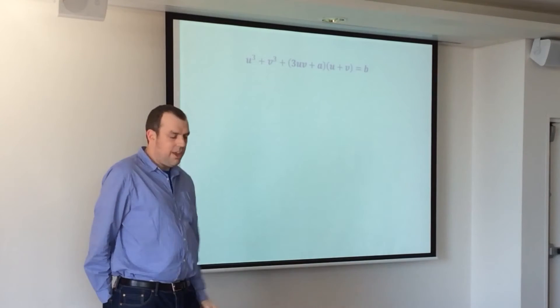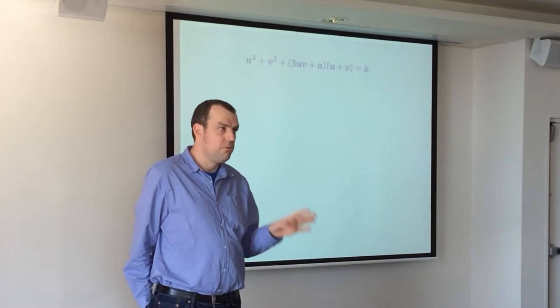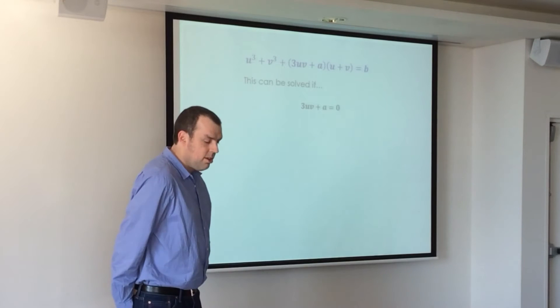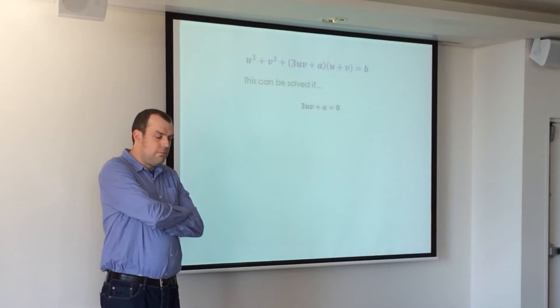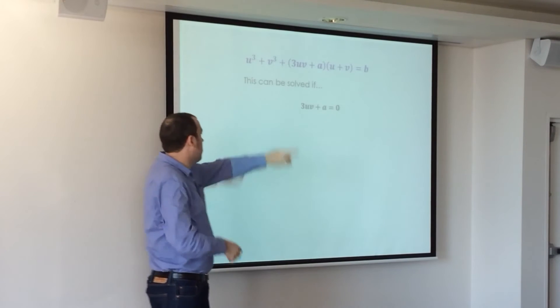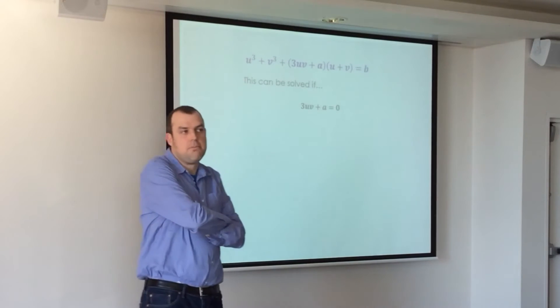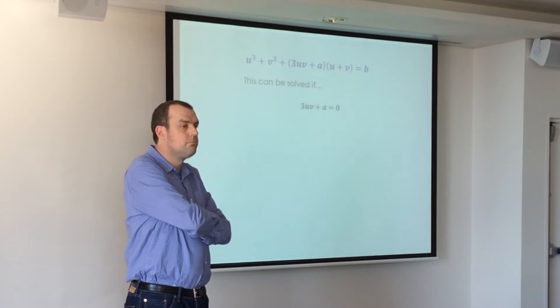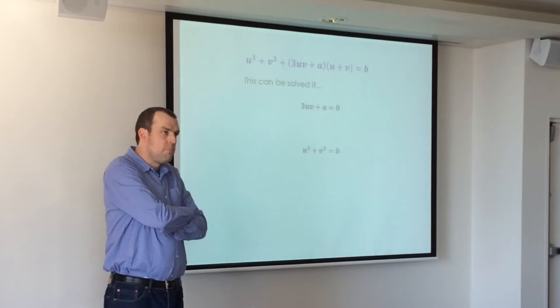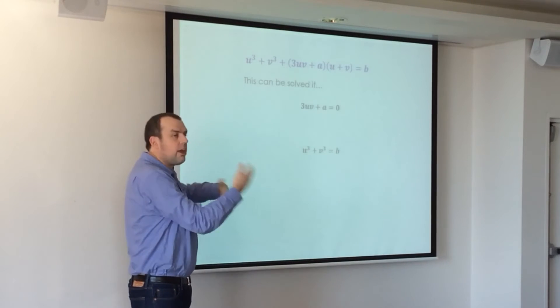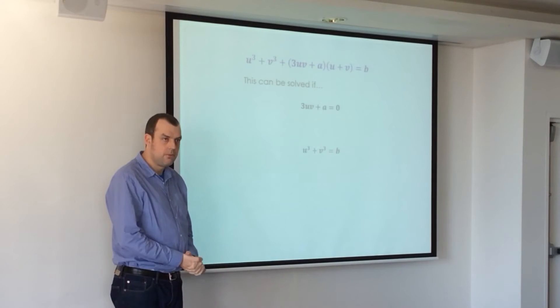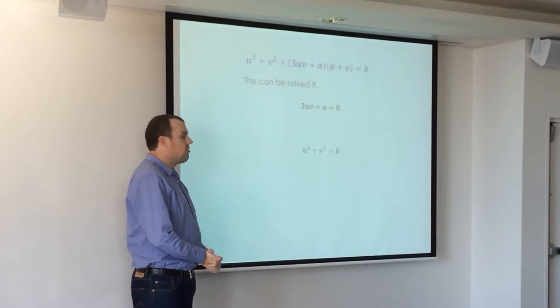This can be solved if... And I'm not saying if and only if. I'm saying if... What if 3uv plus a were equal to 0? Now, that doesn't solve it, but what if this term were equal to 0? What would that then imply? u cubed plus v cubed equals b. That's right. So, working in reverse, if those two things were true, then that would be solved, wouldn't it? And so this is how we proceed.